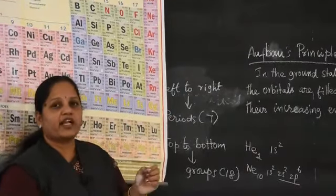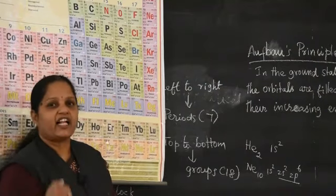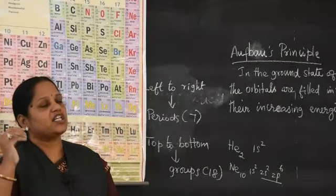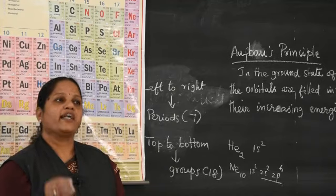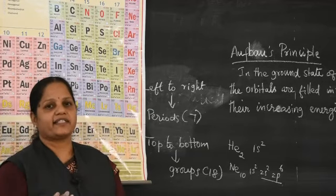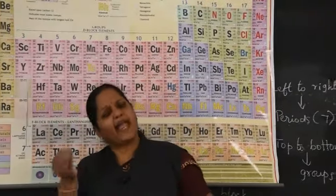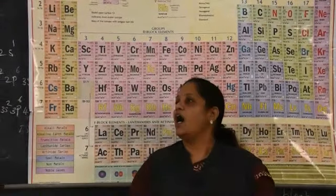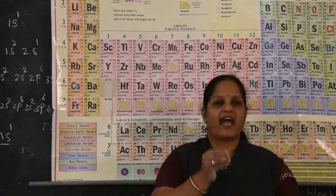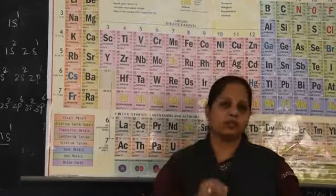I have mentioned electronic configuration many times — so what does it mean? For writing electronic configuration, we use valency. What is valency? How do you find it? This is the basic concept in chemistry. There is also another term called oxidation number, otherwise called oxidation state. What is the main difference between valency and oxidation number? We will discuss each one with suitable examples.